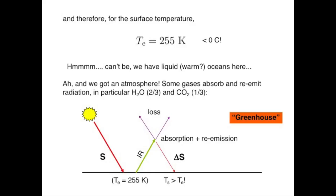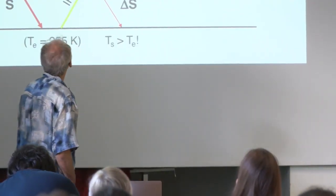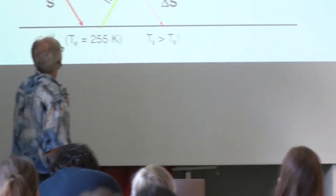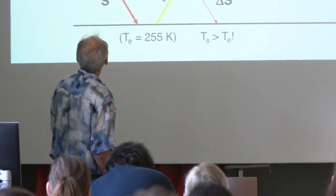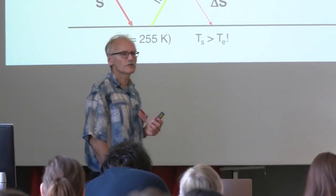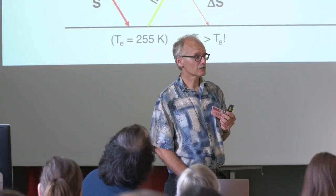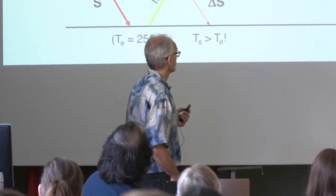Doing that calculation gives 255 K for Earth at 1 AU. That's not much — we're used to about 15 degrees centigrade, not 255 K. That would not be the present Earth. But we know we have an atmosphere, so we need to take the atmosphere into account, and it gets more complicated.